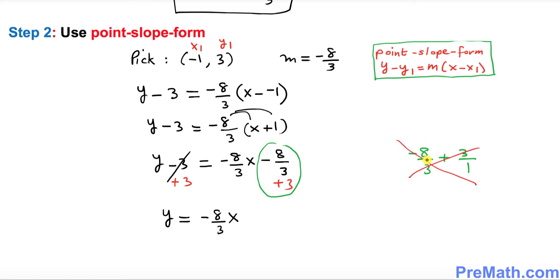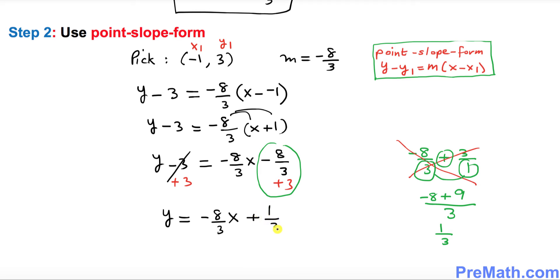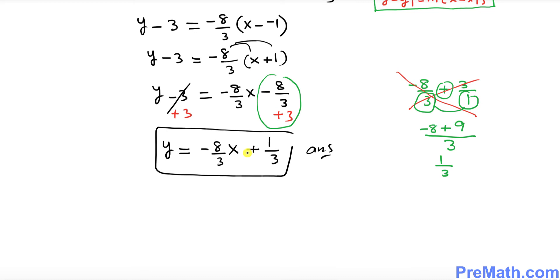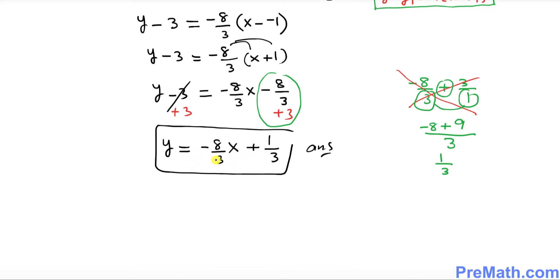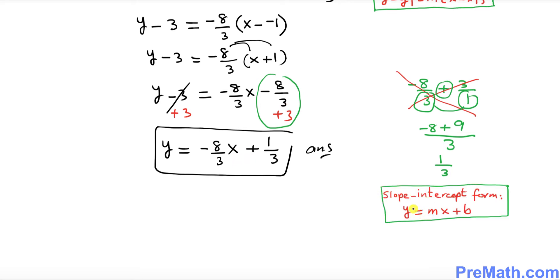Use the crisscross method: multiply negative 8 times 1 to get -8, and 3 times 3 to get 9. The denominator is 3 times 1 equals 3. So on top we get -8 plus 9 equals 1, giving us 1 over 3. The quantity turns out to be positive 1/3. Our final answer is y equals negative 8/3 x plus 1/3, which is in slope-intercept form (y = mx + b).